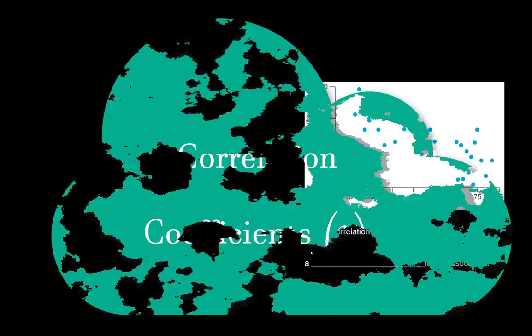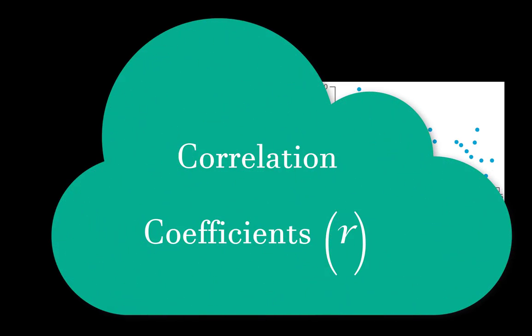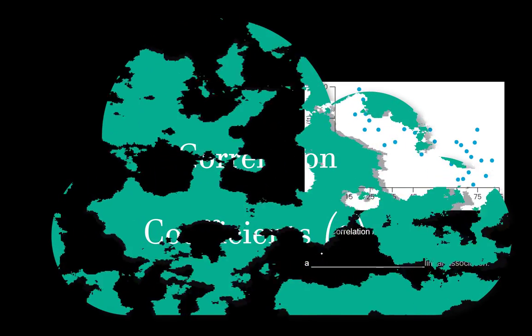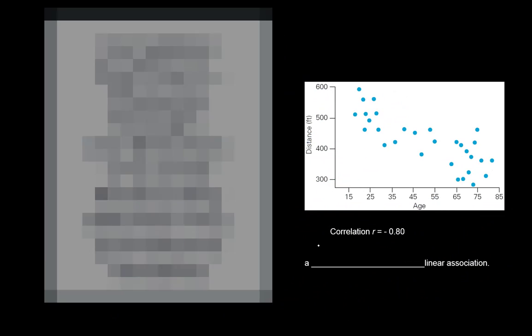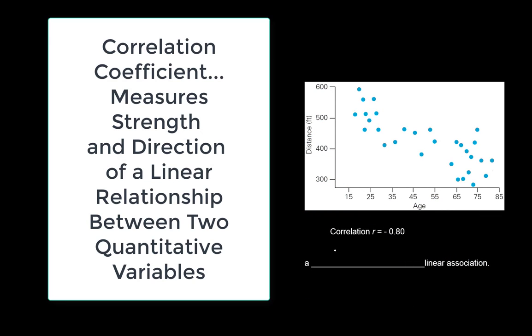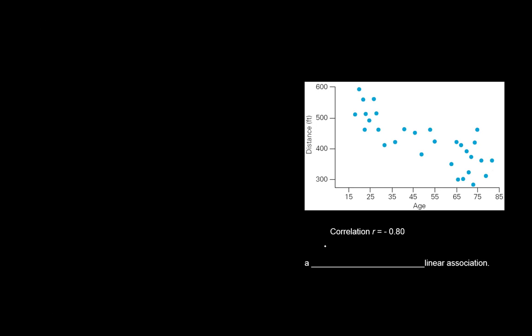The correlation coefficient R measures the strength and direction of a linear relationship between two quantitative variables. When you see strength on a scatter plot, the tighter the pattern, the stronger the relationship is.